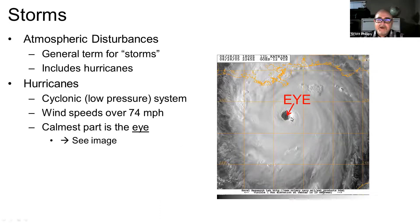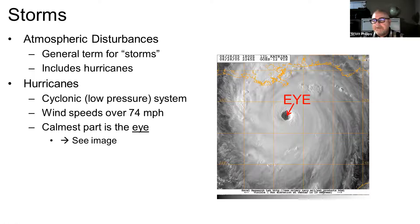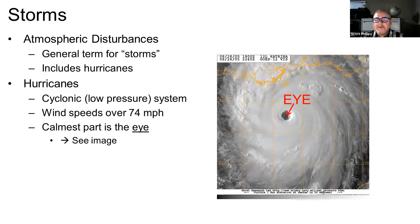Hurricanes are defined by their wind speed. You start with what's called a tropical depression, then a tropical storm, and then if it gets above a certain speed, it's classified as a hurricane. There are also some other names they go by in other parts of the world — we'll get to that in a moment, but let's stick with hurricane for now.